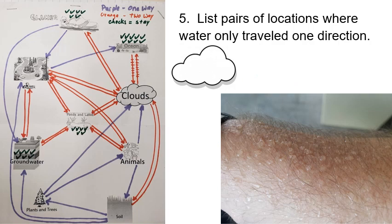Another one-directional example: animals. We sweat, and that water goes up into the air and can contribute to cloud formation. But the reverse doesn't work — rain can fall on people and we get wet, but the water doesn't go into us through our skin. So this is a one-directional relationship: water goes from animals to clouds, not the other way around.